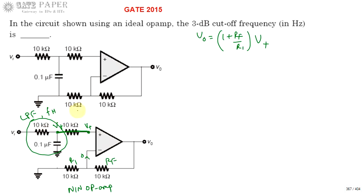So directly we can tell the answer from this. FH equals 1 by 2 pi RC, and R value is 10 kilo ohms and C value is 0.1 microfarad. These are the two elements.